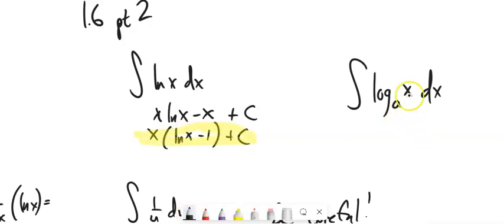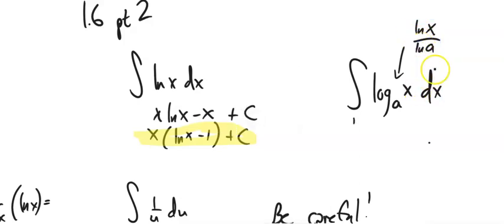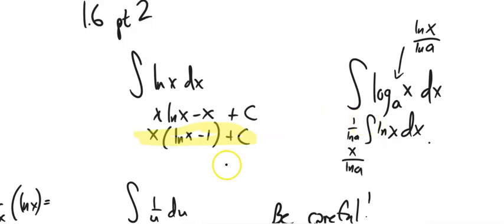For log base a of x, we can use the change of base formula — think of this as natural log of x divided by natural log of a. Since 1 over ln(a) is just a constant, this becomes that constant times the integral of ln(x). So the result is x times (ln x minus 1) over ln(a), plus C.